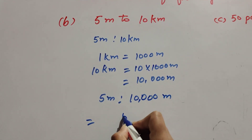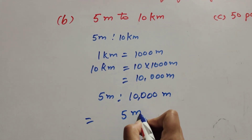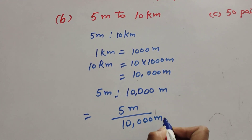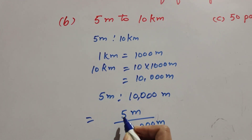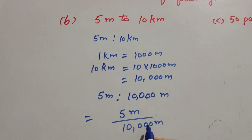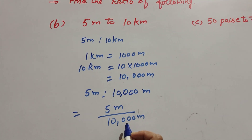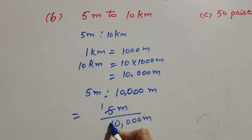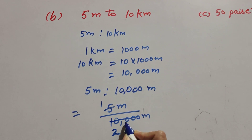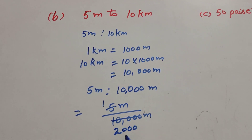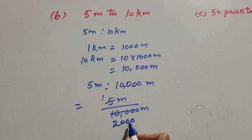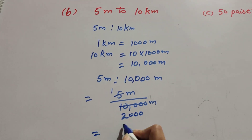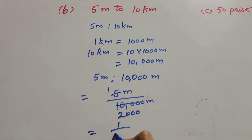Since 5 and 10,000 are both divisible by 5, we cancel them. So the ratio equals 1 over 2000, meaning the ratio of 5 meters to 10 kilometers is 1:2000.